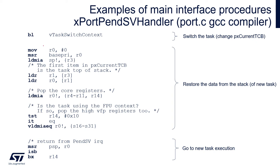After this operation, the scheduler can unblock the interrupts by clearing the BASEPRI register content. In the next step, the scheduler operates on the stack of the new task to restore core registers R4 to R11 and R14, and in case any FPU operations were done in the task during previous execution, it also restores the content of S16 to S31 registers. Next, an update of the process stack pointer is done and a return from this procedure occurs, which allows the new task to be executed from the last place it was stopped during the previous context switch.